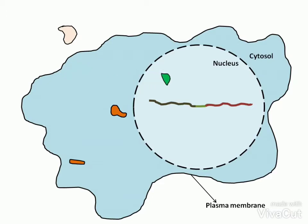The hormone then passes from the cytosol of the cell to the nucleus via the nuclear pore. In the nucleus, the hormone binds to a specific receptor protein called REC.